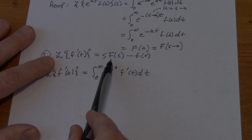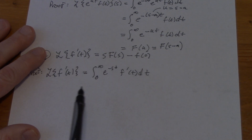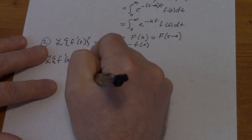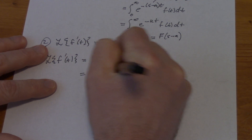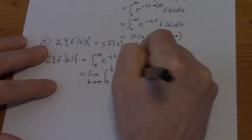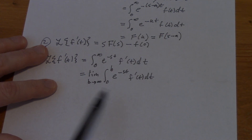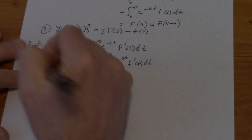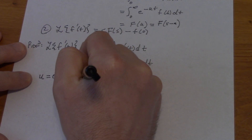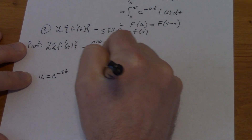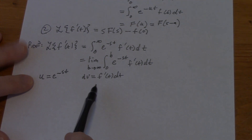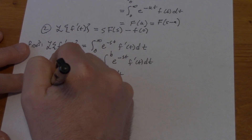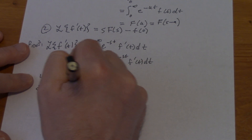Looking at what they're asking us to do, we know the Laplace transform for f is in this expression. So first, let's make this into a proper integral — the limit as b goes to infinity of the integral from zero to b of e to the minus st, f prime of t dt. We're going to do this by integration by parts. We let u equal e to the minus st, and dv would be f prime. Because we know the antiderivative of f prime is f, so v would be f of t, and du would be minus s e to the minus st dt.